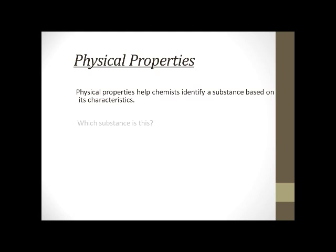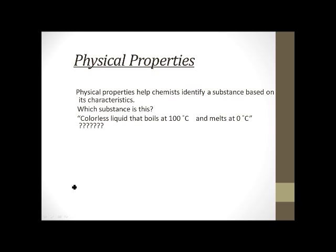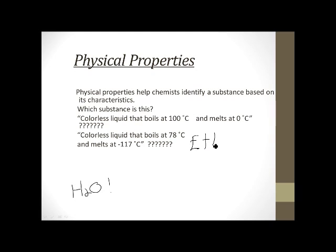So let's say we want to think about boiling and melting points. Which substance is this going to be? It's a colorless liquid that boils at 100 degrees Celsius and melts at zero degrees Celsius. What would that be? Well, if you guessed water, good old H2O, that would be correct. What about another one? A colorless liquid that boils at 78 degrees Celsius and melts at minus 117 degrees Celsius. Okay? If you looked at it, it would look the same as water, but it has some different physical properties and that would be ethanol.